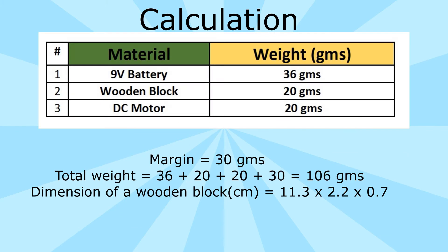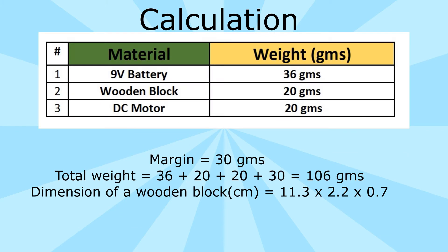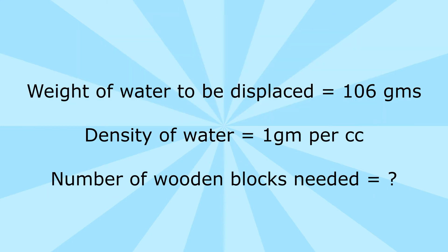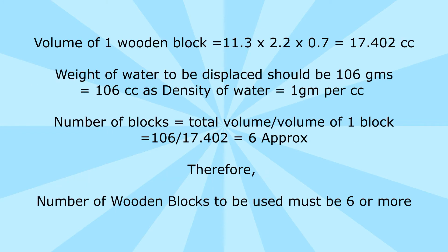Here is a measure of the weight of the materials. I added a margin weight of 30 grams, so the total is 106 grams. Now we know that we need to displace water of more than 106 grams. The weight of water to be displaced should be 106 grams, equivalent to 106 cc, as the density of water is 1 gram per cc.